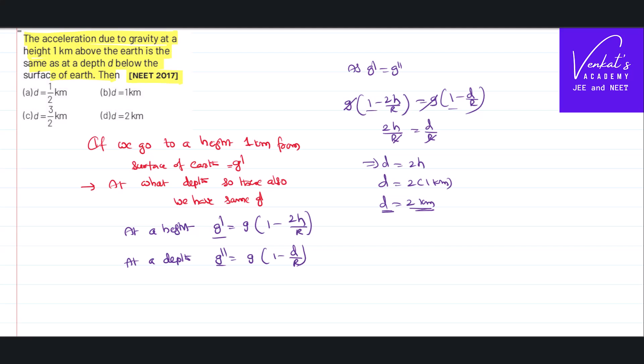So it is to be understood that the loss of the gravity is more when you go above the earth than into the earth. That is why to lose the same value as we have got 1 kilometer above the earth, we need to go 2 kilometer deep into the surface of the earth.